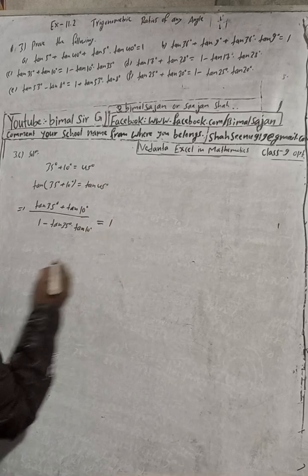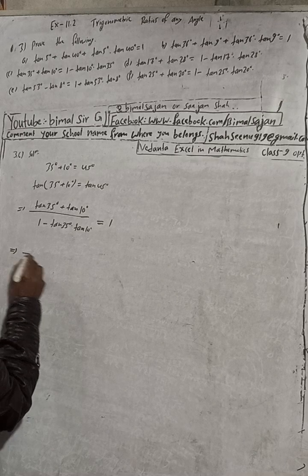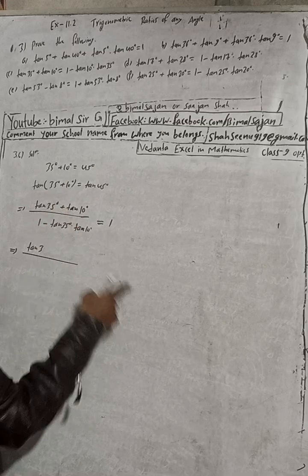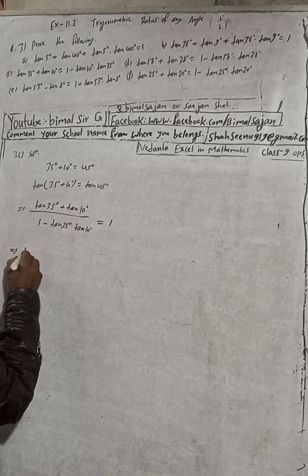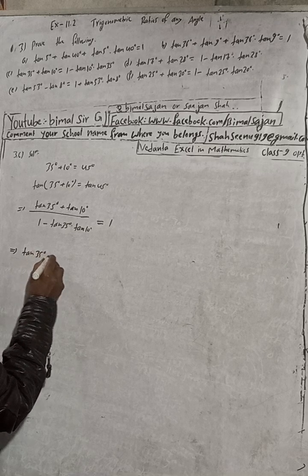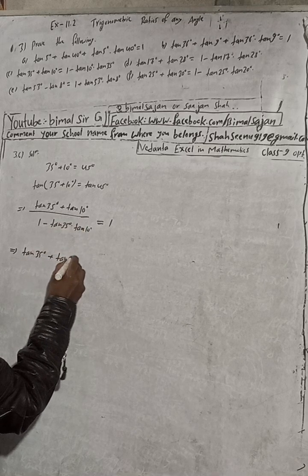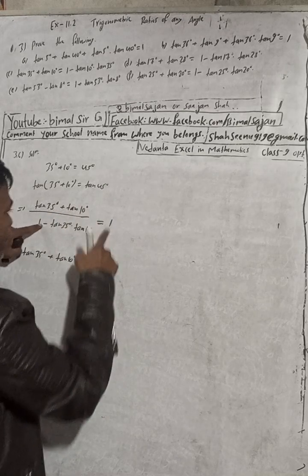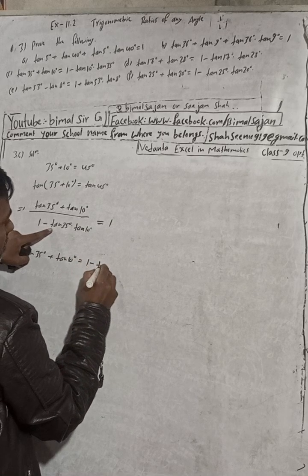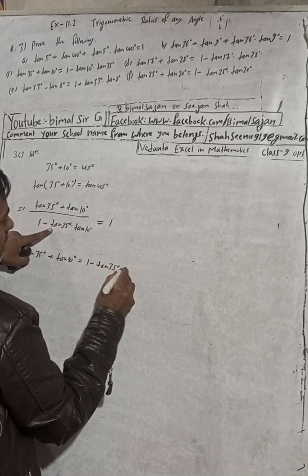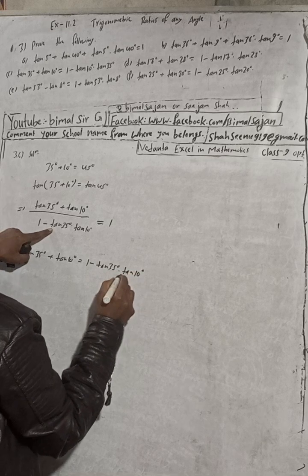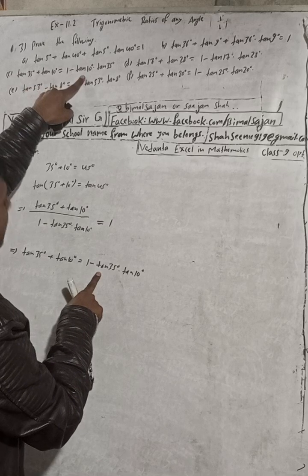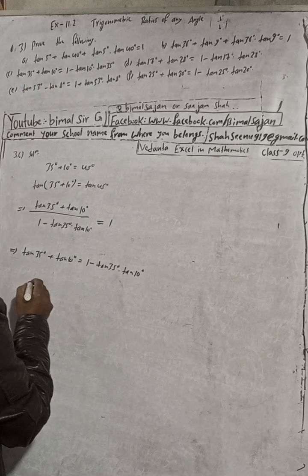Cross multiply: tan35° + tan10° = 1 × (1 − tan35°·tan10°), which gives tan35° + tan10° = 1 − tan35°·tan10°. This is exactly what we had to prove — proved.